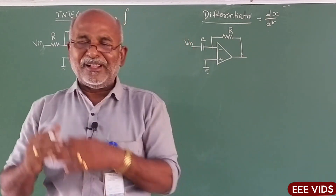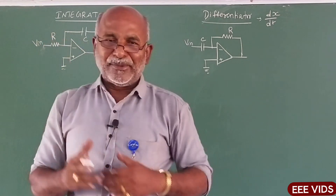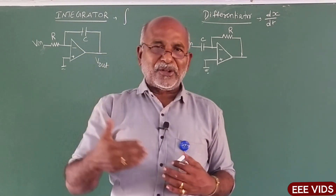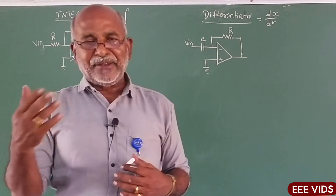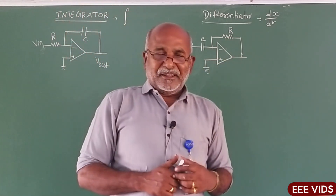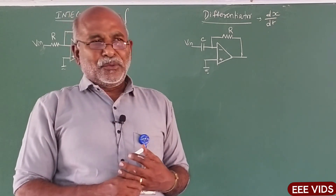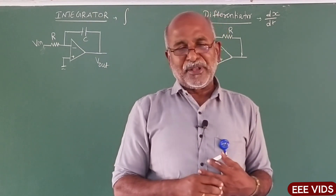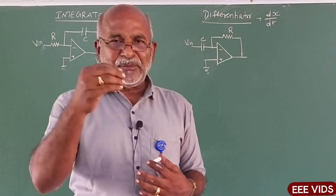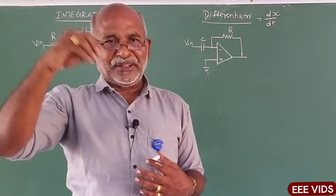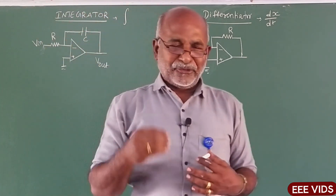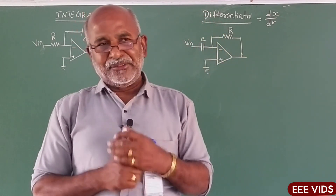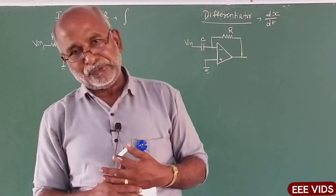If we use the energy meter, we use it to accumulate and add — that is the integrator. Differentiator: what we need to say is a particular quantity and the value that changes with respect to time. For example, speed — rate of movement. So, the quantity changes with respect to time. Speed comes from D by DT — rate of movement.